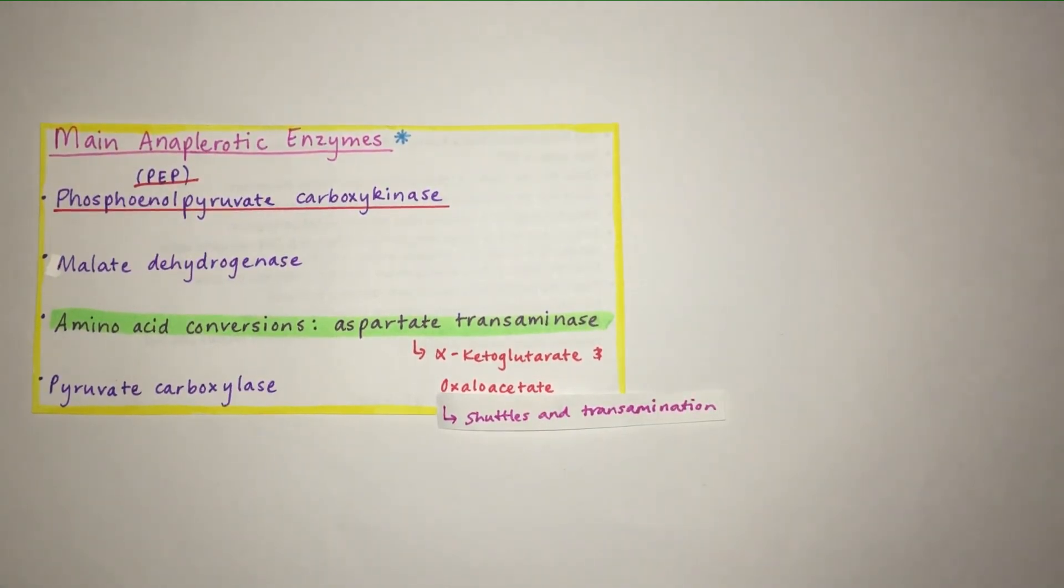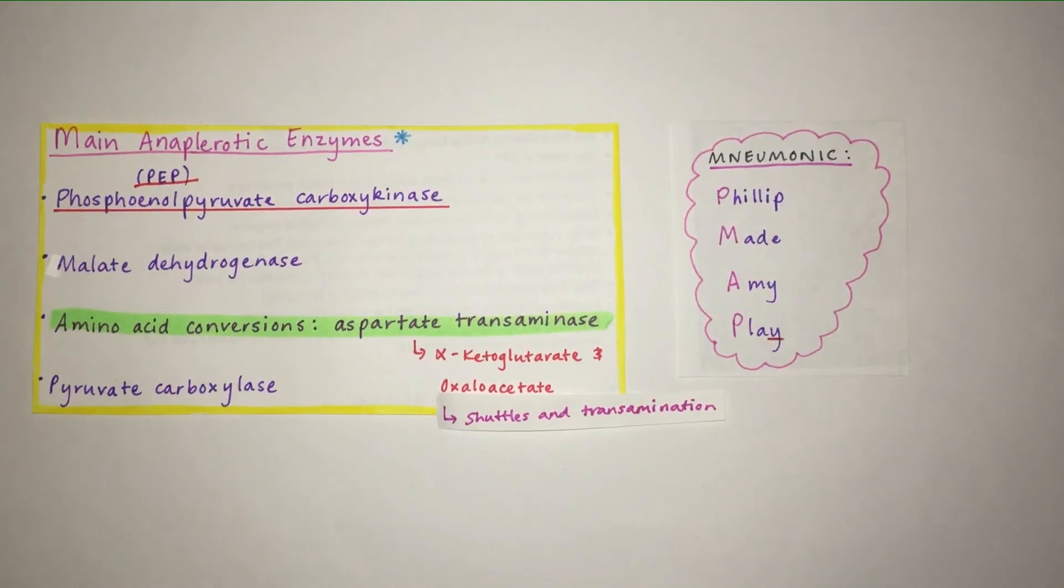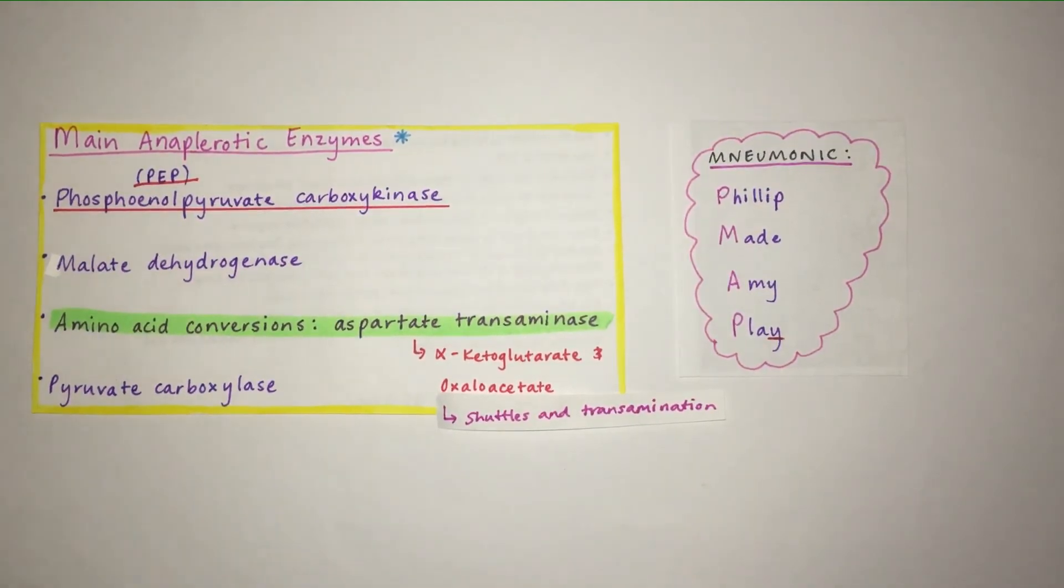And the last one, pyruvate carboxylase, of course is one enzyme that we just looked at when we were looking at the anaplerotic reactions. I've put it in this order so that you can see this mnemonic: Philip made Amy play. Simple, and hopefully will help you remember these main anaplerotic enzymes, because this is an extremely important concept to know.